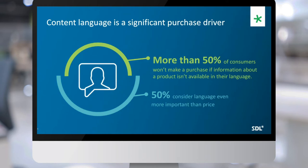The third thing we talked about is omni market. Language is a significant purchase driver. Common Sense Advisory statistics show that more than 50% of consumers will not buy a product unless they have the information in their own language. Being omni market by design means thinking about markets and languages in advance rather than adding them as you enter a market. If you think about the drive to personalization in e-commerce and marketing, language is probably the most personal personalization you can have.